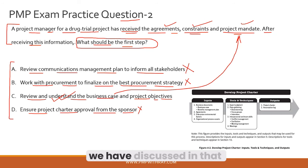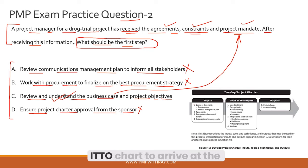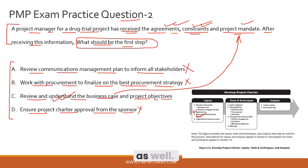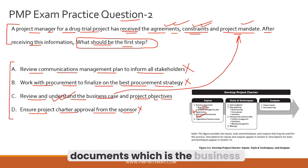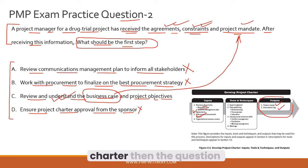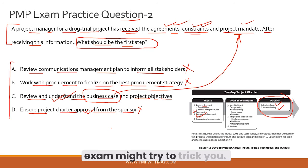Looking at the ITTO chart from the process group practice guide: you need not memorize it by rote but understand its applicability. The inputs include agreements, enterprise environmental factors linked to constraints, and business documents such as the business case — which is the phrase in the correct answer option. The outputs are the project charter and the assumption log. Once you have the project charter, then comes the approval from the sponsor.